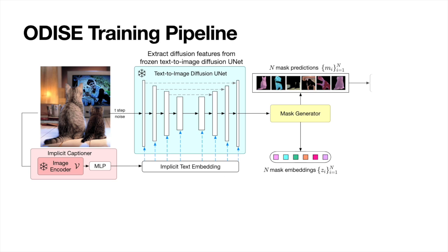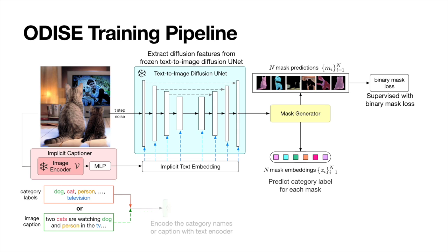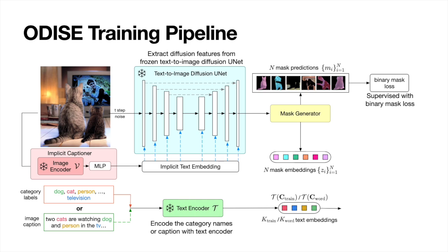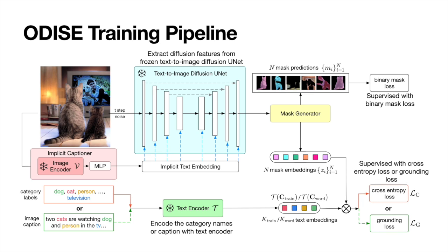Mask prediction is supervised by a binary mask classification loss. To predict the label of each mask, we need to learn to classify each mask embedding. We explore two settings. The first uses the category labels of each mask and encodes them into text embeddings with a frozen text encoder, applying a cross-entropy loss on the dot product of the text and visual embeddings. The second setting uses weaker supervision, where only the global image caption is available — we extract and encode all the nouns and noun phrases in the caption, and use a grounding loss to learn the mask embedding. It's worth noting that most components of Odyssey are frozen during training; we only fine-tune the MLP and the mask generator with 28.1 million parameters, that is, only 1.8% of the full model.